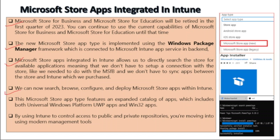We can now search, browse, configure, and deploy Microsoft Store apps within Intune. This Microsoft Store App type features an expanded catalog of apps which includes both Universal Windows Platform (UWP) apps and Win32 apps. By using Intune to control access to public and private repositories, we are moving into using modern management tools.